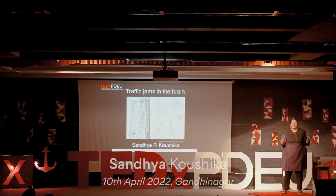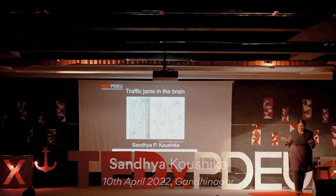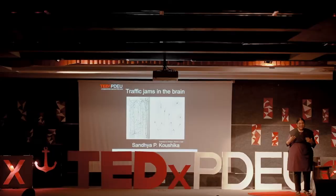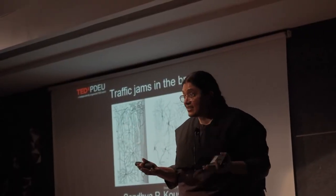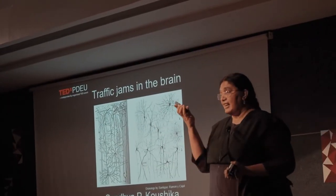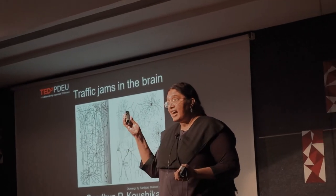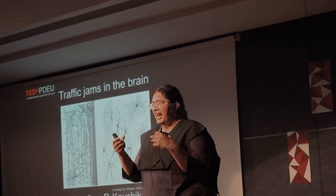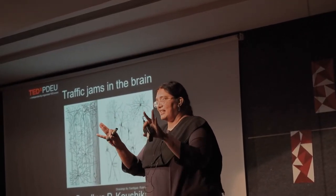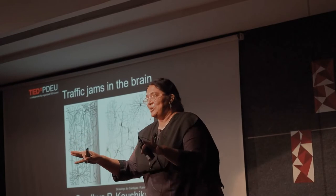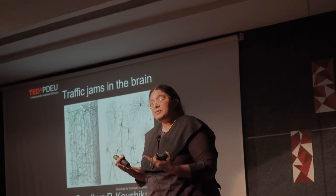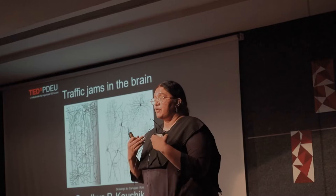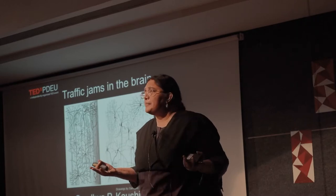Why do we need to study the brain? The brain is the way in which we interact with the world around us. For instance, it is because of the brain that I know that I have a pointer in my hand and I can barely see that there are people in this auditorium. The brain also allows you to sense if you are hungry.